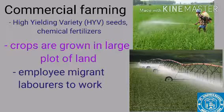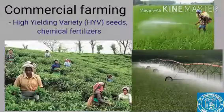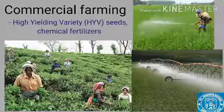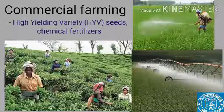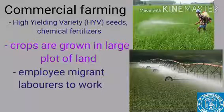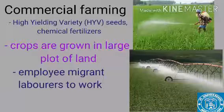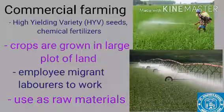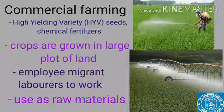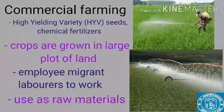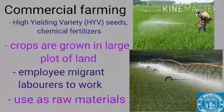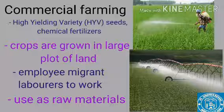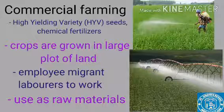For example, Assam grows tea over a very large area, and laborers are paid on the basis of daily wages. This type of employment is found in many cash crop producing areas. The produce is also used as raw material in industries — for example, cotton is used as a raw material in the textile industry. Therefore, many steps have been taken to improve transport and communication networks from production areas to industries and markets.